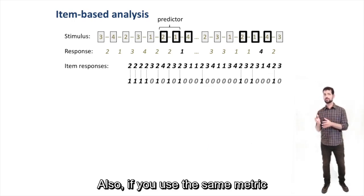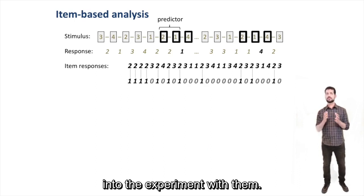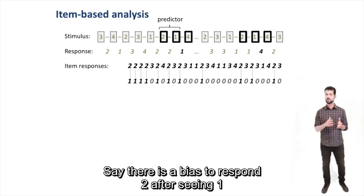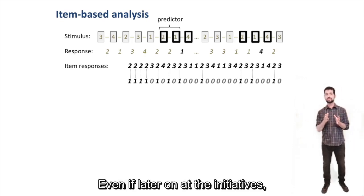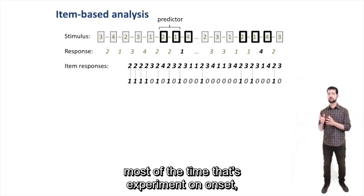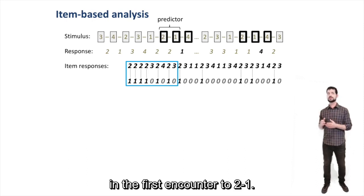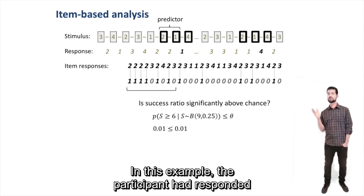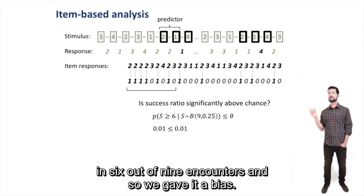Also, we can use the same logic to find behaviors that participants brought into the experiment with them. Say there's a bias to respond 2 after seeing 2-1, we'd expect behavior to look something like this. Even if later on it diminishes, the behavior should be done most of the time at experiment onset, so we can test its significance in the first encounters with 2-1. In this example, the participant had responded to 2-1 by looking to 2 in 6 out of 9 encounters, and so we deem it a bias.